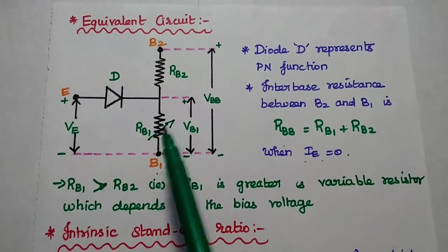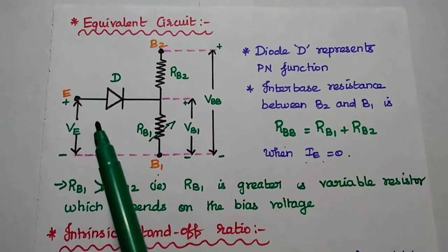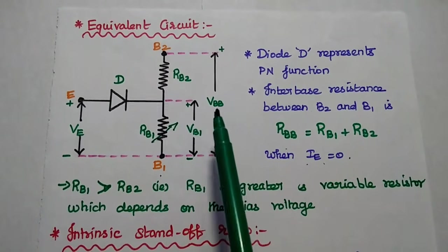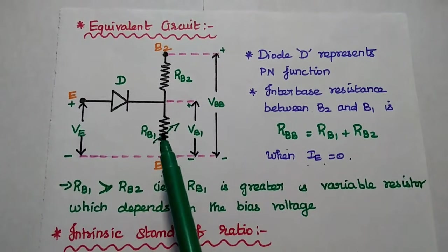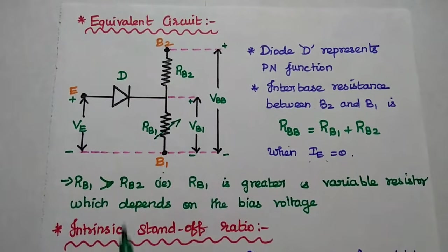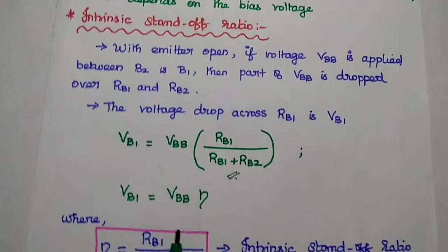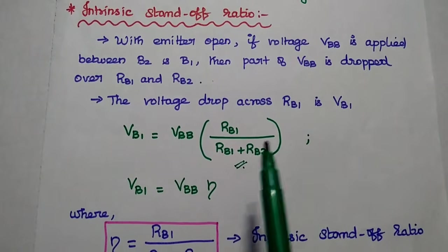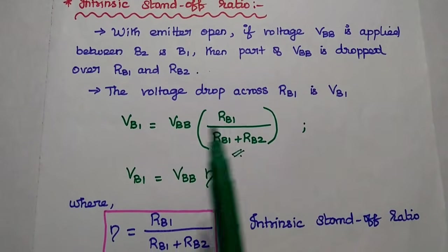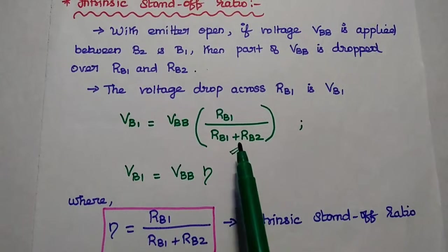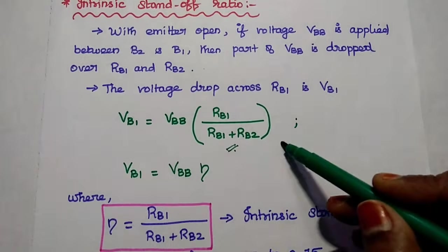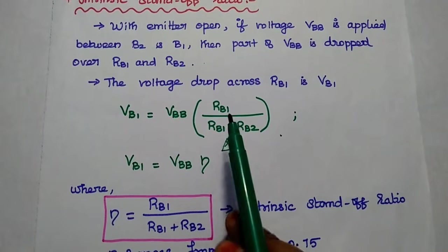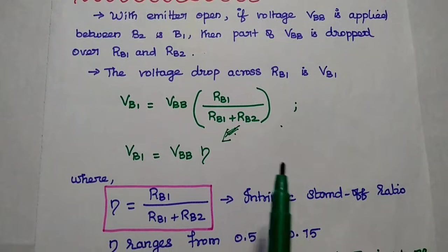The voltage drop across RB1 with supply VBB and emitter current equal to 0 is found using the voltage division rule. With emitter open and VBB applied between B2 and B1, the voltage drop across RB1 is: VB1 = VBB × (RB1 / (RB1 + RB2)). This ratio is represented as eta — the intrinsic standoff ratio — where eta = RB1 / (RB1 + RB2).